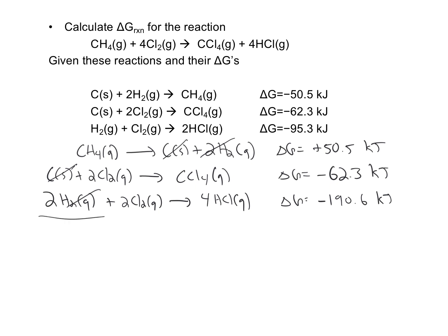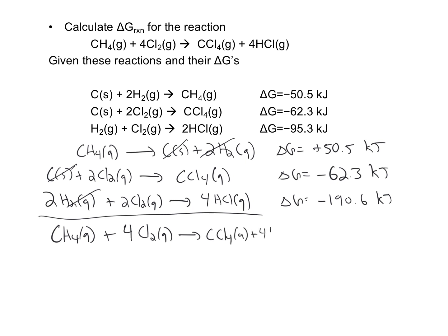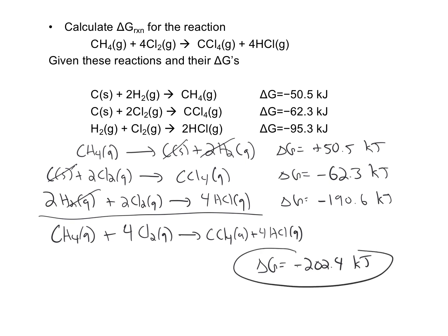When I add up those reactions, I get CH4 gas plus 4 Cl2 gas going to CCl4 plus 4 HCl. That matches the reaction I was trying to reproduce, which is excellent. Now all I have to do is add up the delta G's: 50.5 minus 62.3 minus 190.6 gives me minus 202.4 kilojoules. That is the delta G for the reaction I was looking for.